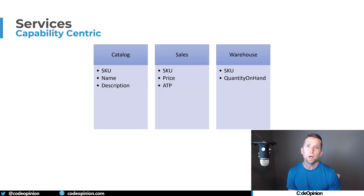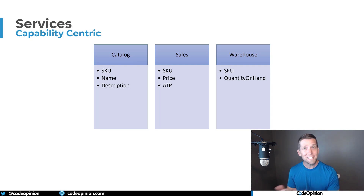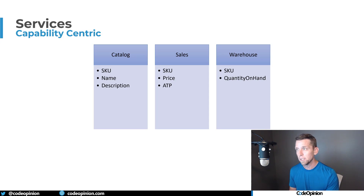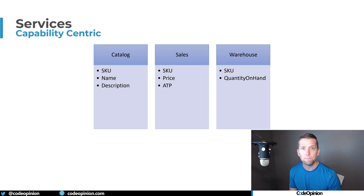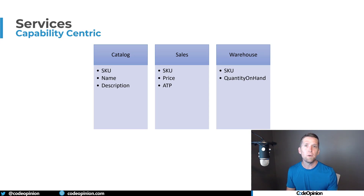When we think about getting the price from a catalog service, we have to ask: why does the price belong in the catalog service? Probably because we were thinking about entities rather than behavior. Does the price really belong to a catalog service, or does it belong alongside sales — the service that actually needs the price? And for the warehouse, we were trying to get the quantity on hand. But in reality, you don't actually need the raw quantity on hand because there's a business function within something like a warehouse called Available to Promise — marked as ATP here.